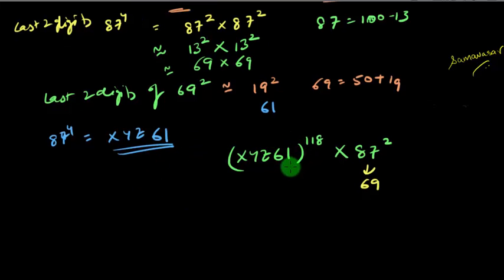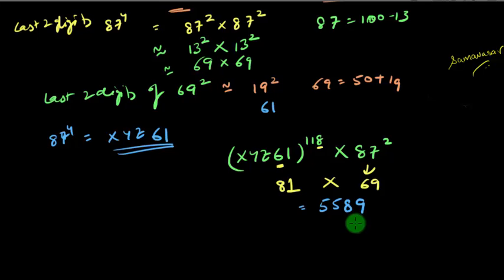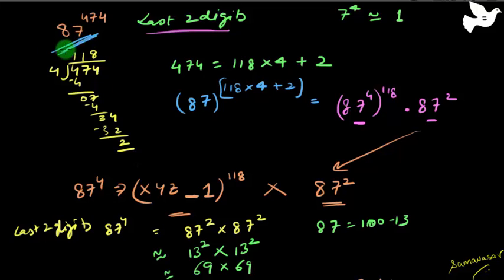Now for the part ending in 1: whenever you have an expression ending in 1, take the tens digit of that number and the units digit of the power and multiply them. The tens digit is 6, the units digit of 118 is 8, so 6 × 8 = 48 — I take 8. The units digit stays 1, so this part gives last 2 digits of 81. Multiplying by 69 gives 5589, so the last 2 digits are 89. That's the answer.